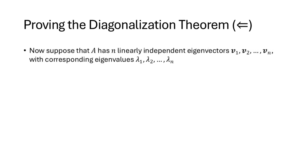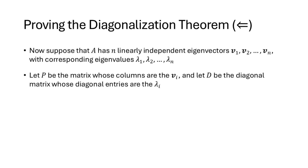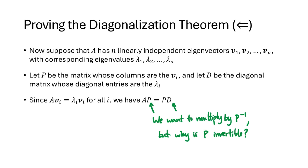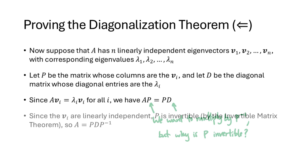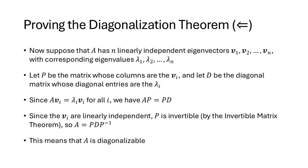Going the other direction, assume A has n linearly independent eigenvectors v1 through vn with eigenvalues λ1 through λn. Let P be the matrix with those eigenvectors as columns and D the diagonal matrix with those eigenvalues. By the definition of eigenvector, Avi equals λi·vi, which means AP equals PD. We want to multiply by P inverse on the right — and P is invertible because its n columns are linearly independent, by the invertible matrix theorem. Multiplying gives A equals PDP inverse, proving A is diagonalizable.